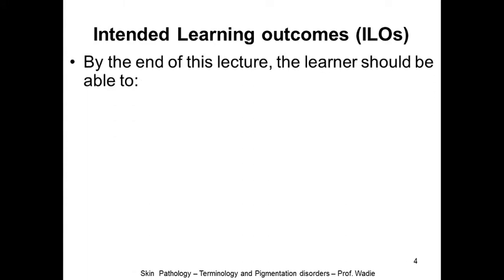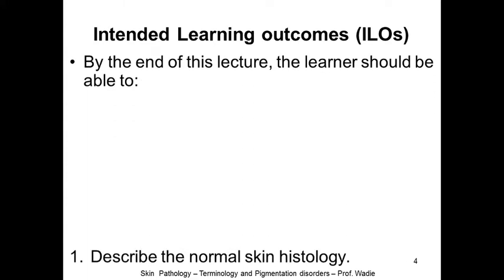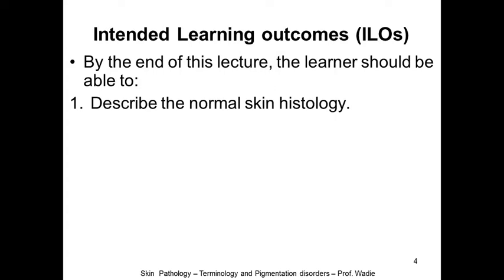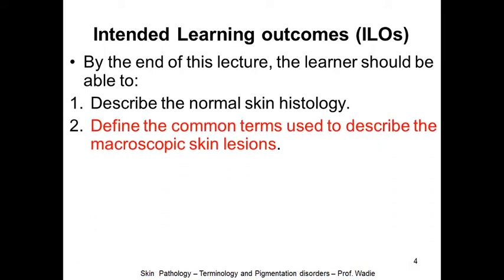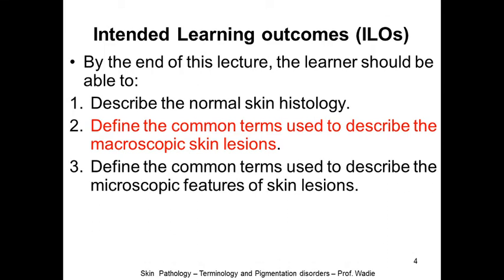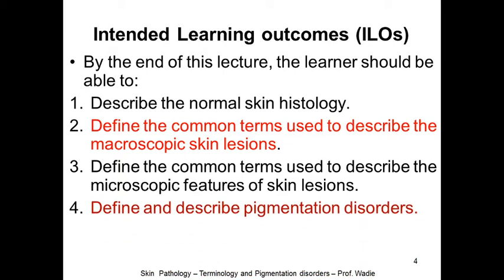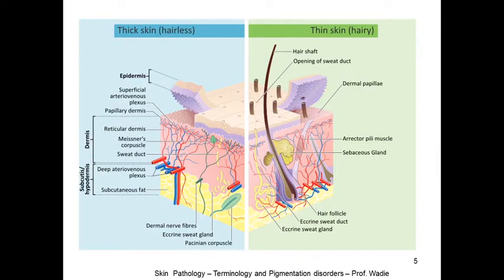The intended learning outcomes: by the end of this lecture the learner should be able to describe the normal skin histology — one of the most important outcomes. Number two, to define the common terms used to describe macroscopic skin lesions. Number three, to define the common terms used to describe microscopic features of skin lesions. And number four, to define and describe some of the most common pigmentation disorders.